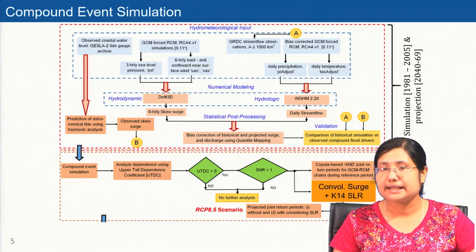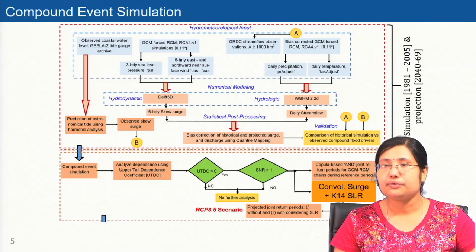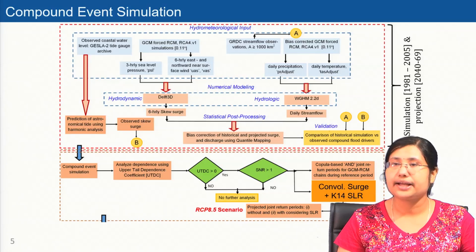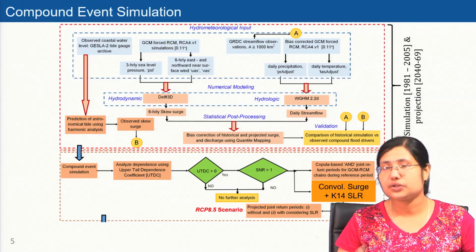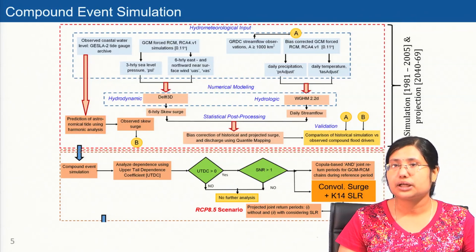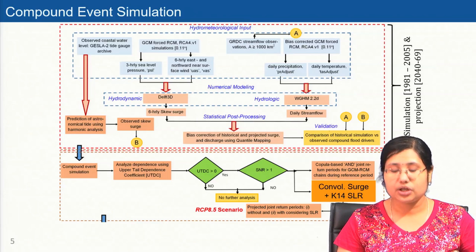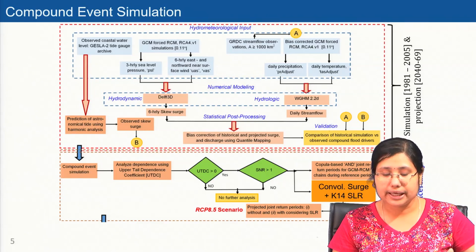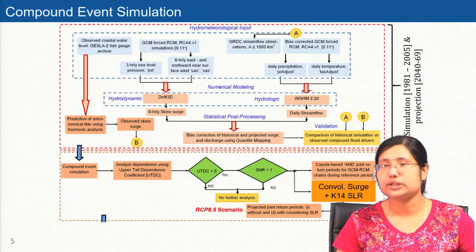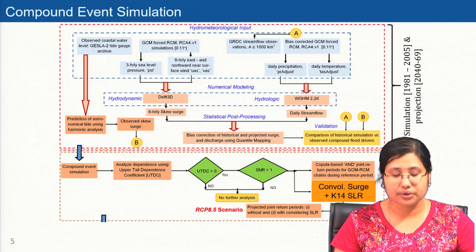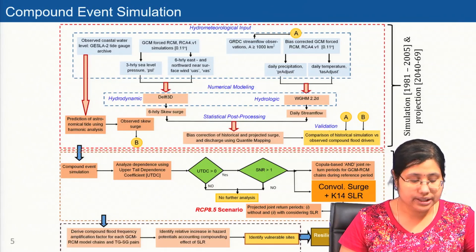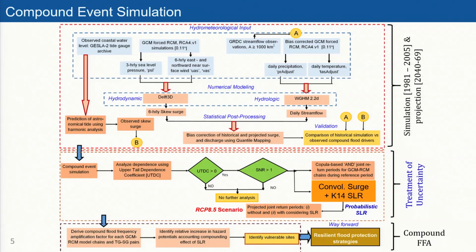We consider the sea level rise scenario using the surge-plus K14 SLR scenario proposed by Robert Kopp et al. Since we consider independence between surge and SLR, we use a convolution integral method to join the surge values with the projected SLR scenario. We consider the joint return period with and without accounting for the SLR scenario, and identify the vulnerable sites which are more prone to sea level rise.